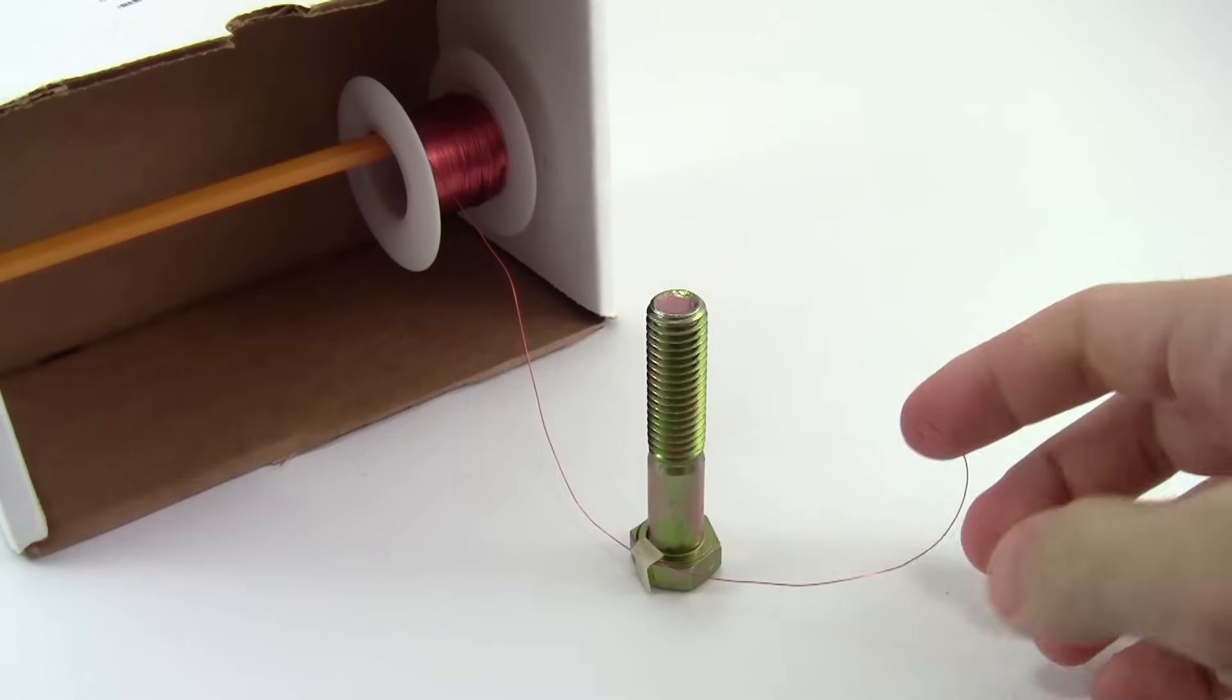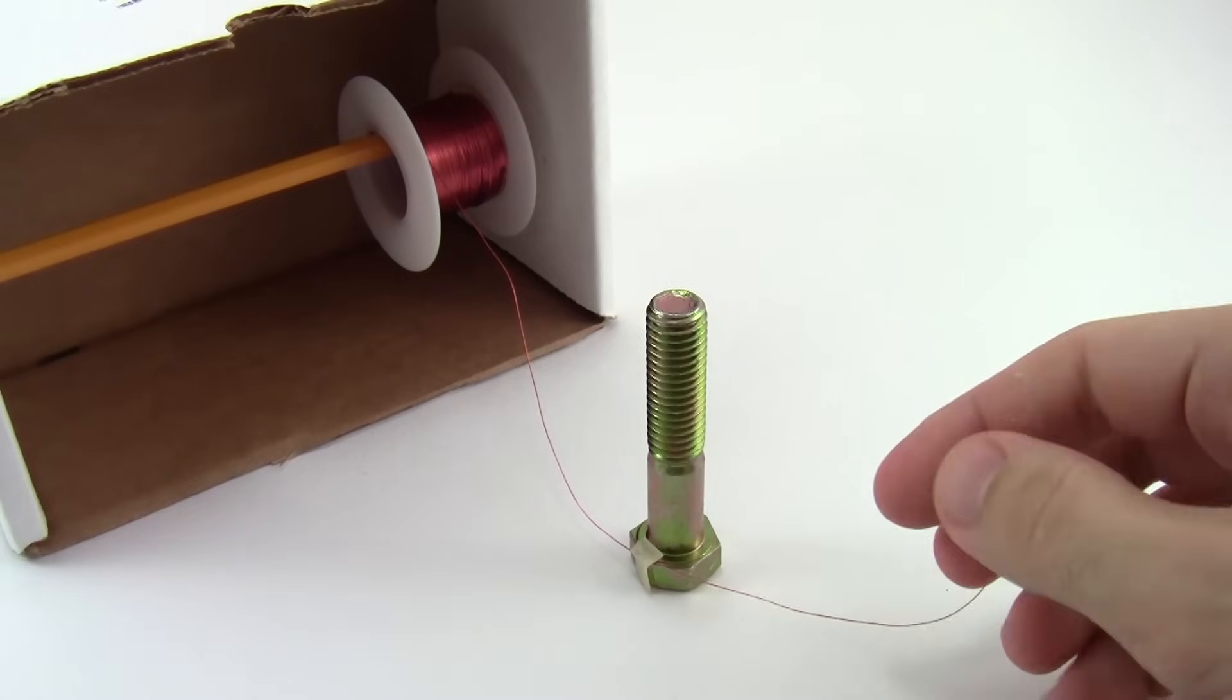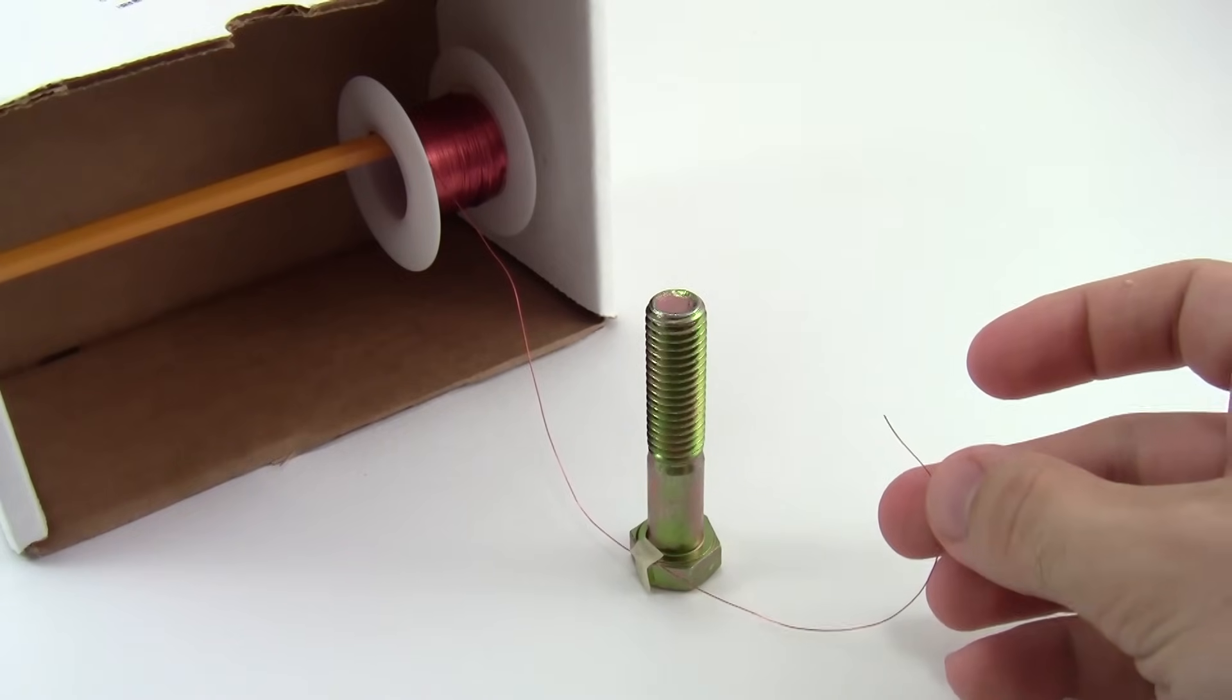To start winding an electromagnet, pull some wire off the spool and use a small piece of masking tape to attach it to one end of the bolt like this. Make sure you leave some extra wire hanging off the bolt as this will make it easier to connect to the battery later.